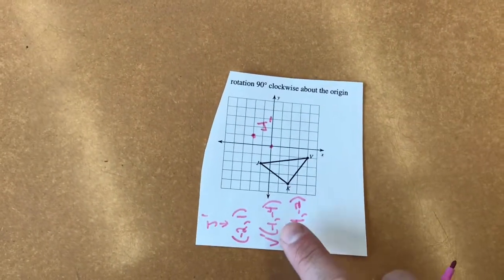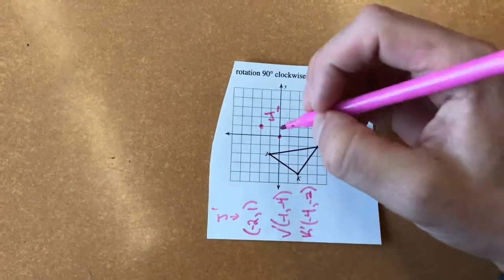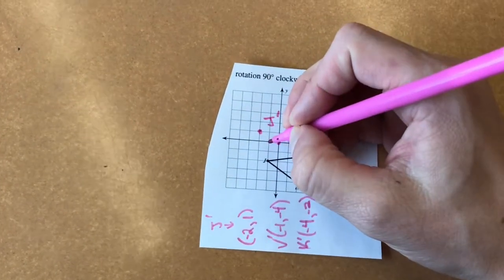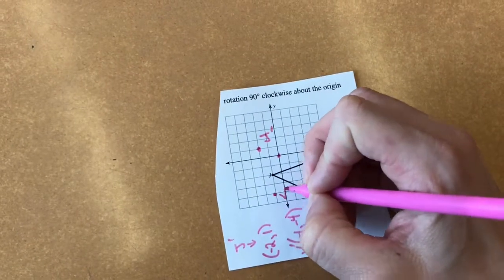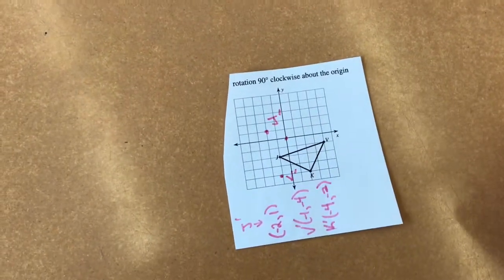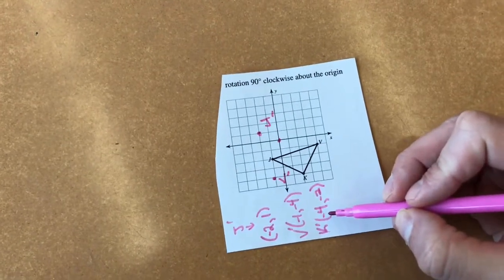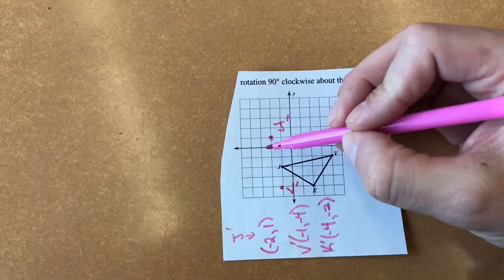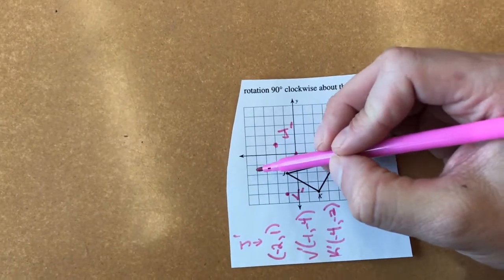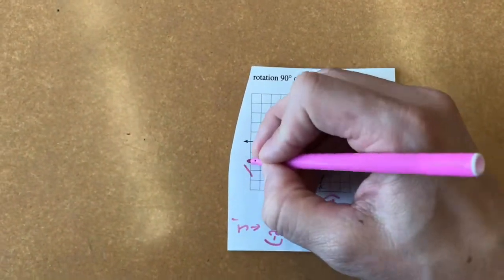V prime is negative one, negative four. So negative one means left one, negative four means down four, and that's V prime. And K prime is negative four, negative two. So that would be left one, two, three, four, down one, two. And that's going to be K prime.